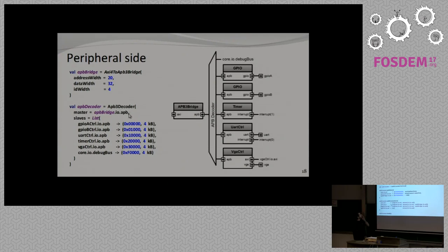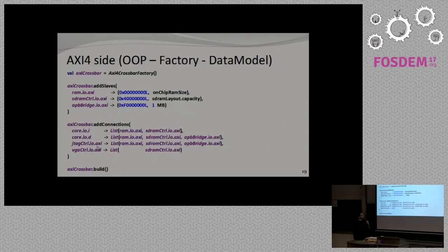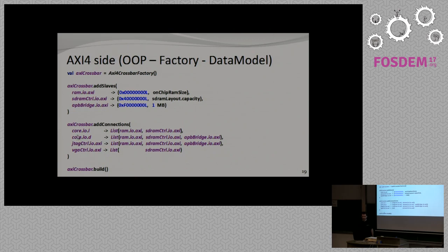There is another pattern for the AXI4 side using a data model pattern. You can create an AXI4 crossbar factory, feed it with a data model by saying 'I have this list of slaves mapped there, this list of masters, and they can access those slaves', and then say 'I've told you everything — please build yourself'. You can really do software engineering to design your hardware with this approach.